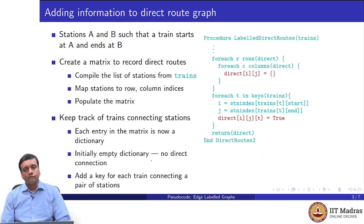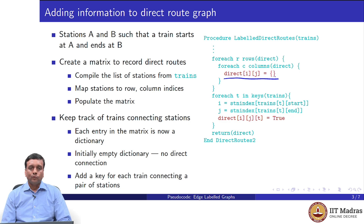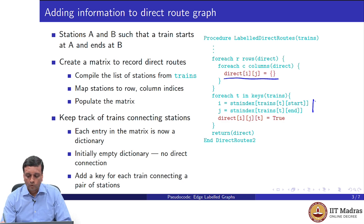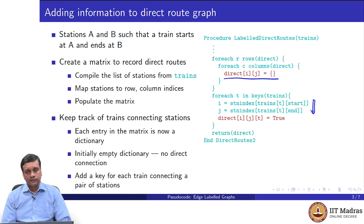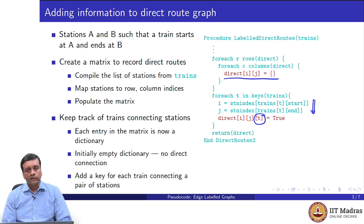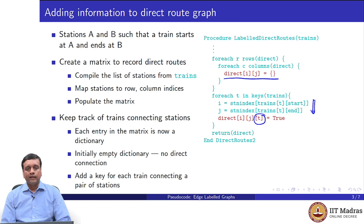What we can do is instead of keeping 0 or 1 as entries in the direct matrix, we make the entries actually dictionaries. Initially, each pair [i][j] is set to an empty dictionary, meaning there is no known route between station i and station j. Whenever we discover a route, instead of changing a 0 to a 1, we add a key for the train we have just discovered. So direct[i][j] could have more than one train — for example, between Mumbai and Delhi there could be multiple trains, each appearing as a key. If there is no connection, the dictionary remains empty.